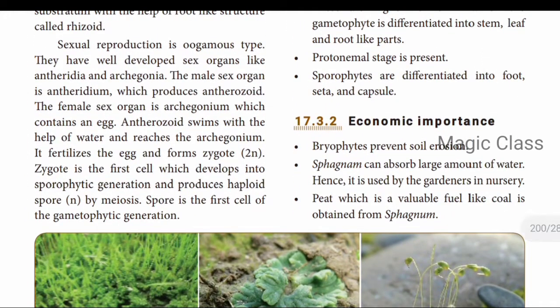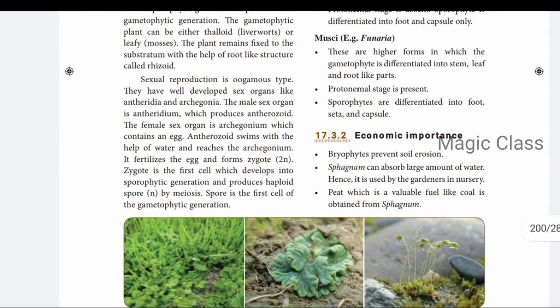Economic importance of bryophytes: mosses are used to prevent soil erosion and retain moisture in soil. Sphagnum can absorb a large amount of water, which is why it is used by gardeners in nurseries. Peat is a valuable fuel similar to coal, and is also obtained from Sphagnum. The examples of bryophytes include Anthoceros, Riccia, and Funaria.